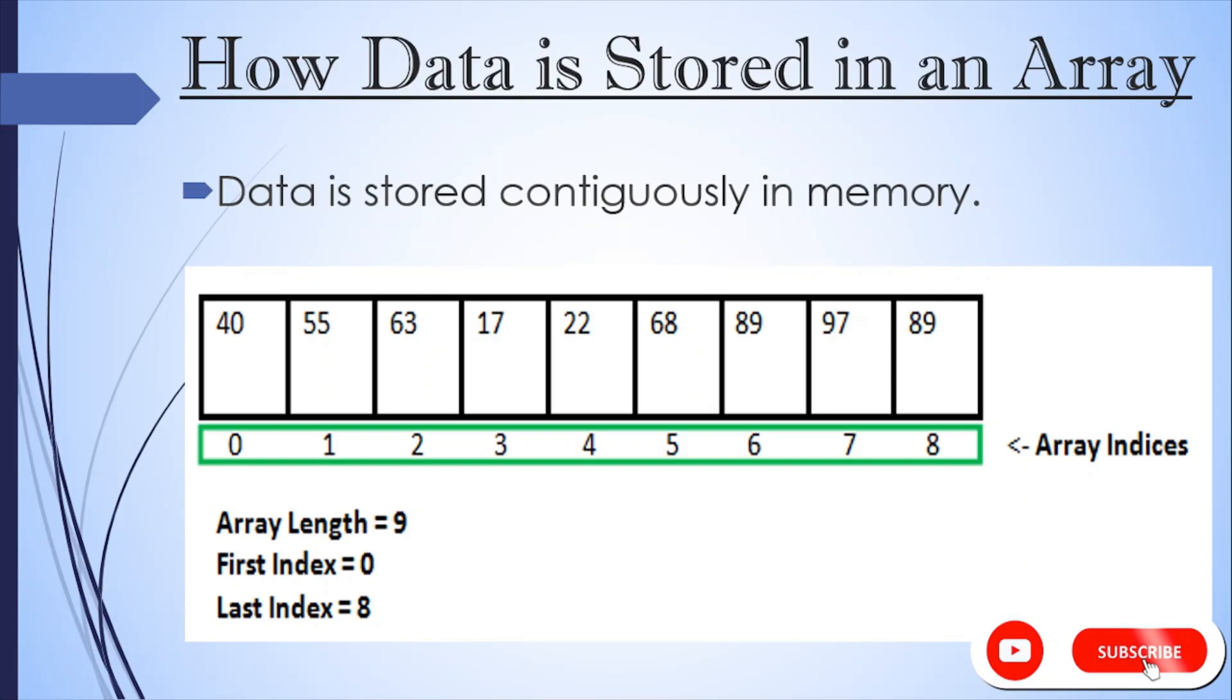Now let's see how the data is stored in array. Data is stored in array in contiguous fashion in the memory. Here you can see in this picture, we have an array of length 9 with its first index as 0 and last index as 8. So the first element at the zeroth index is 40 and the last element at 8th index is 89. In this array, we are only storing the integer values, but it can store any other primitive types as well as the other objects references as well.